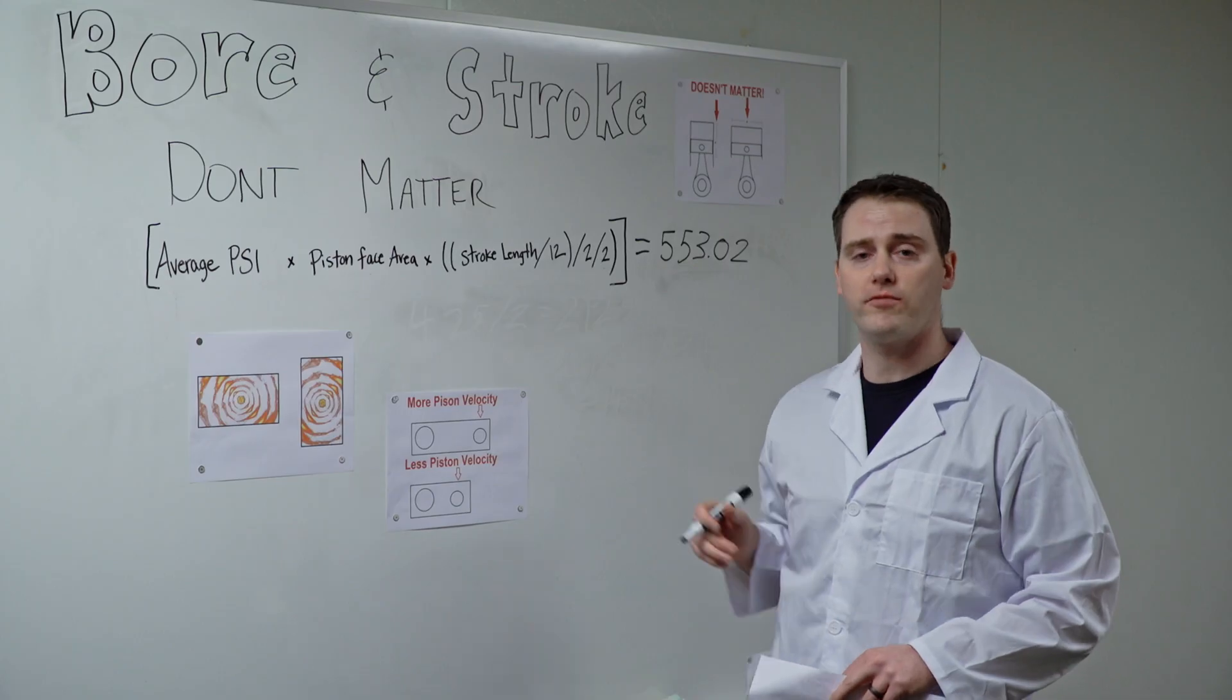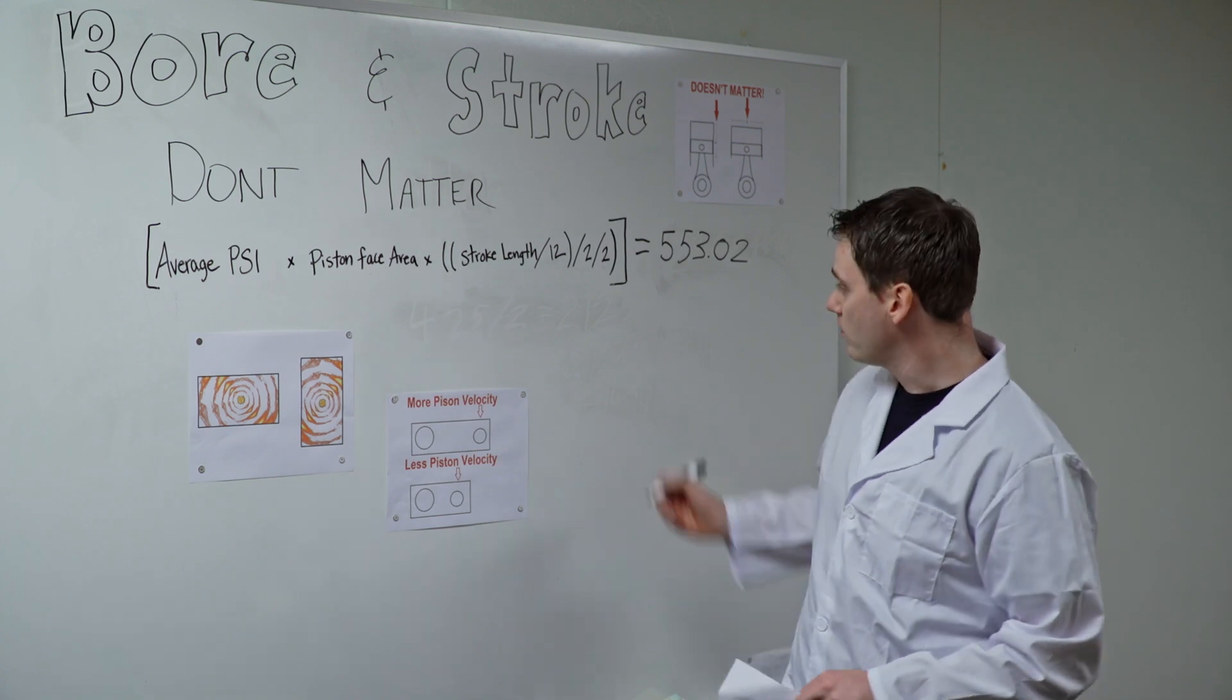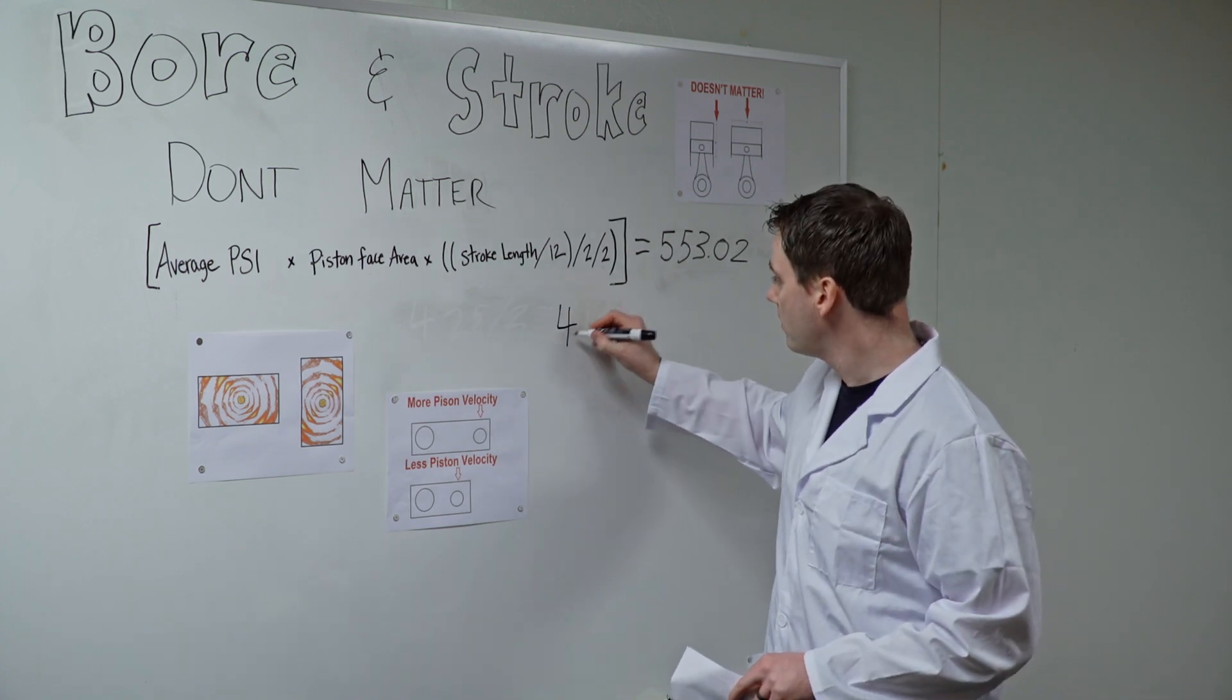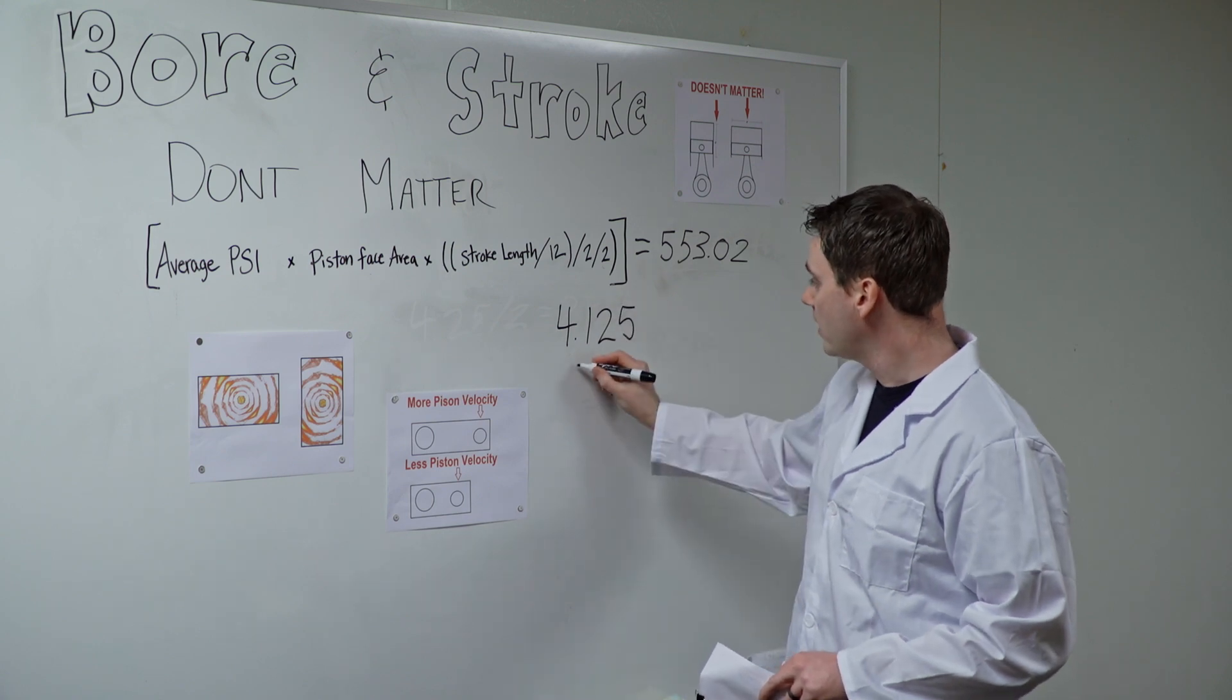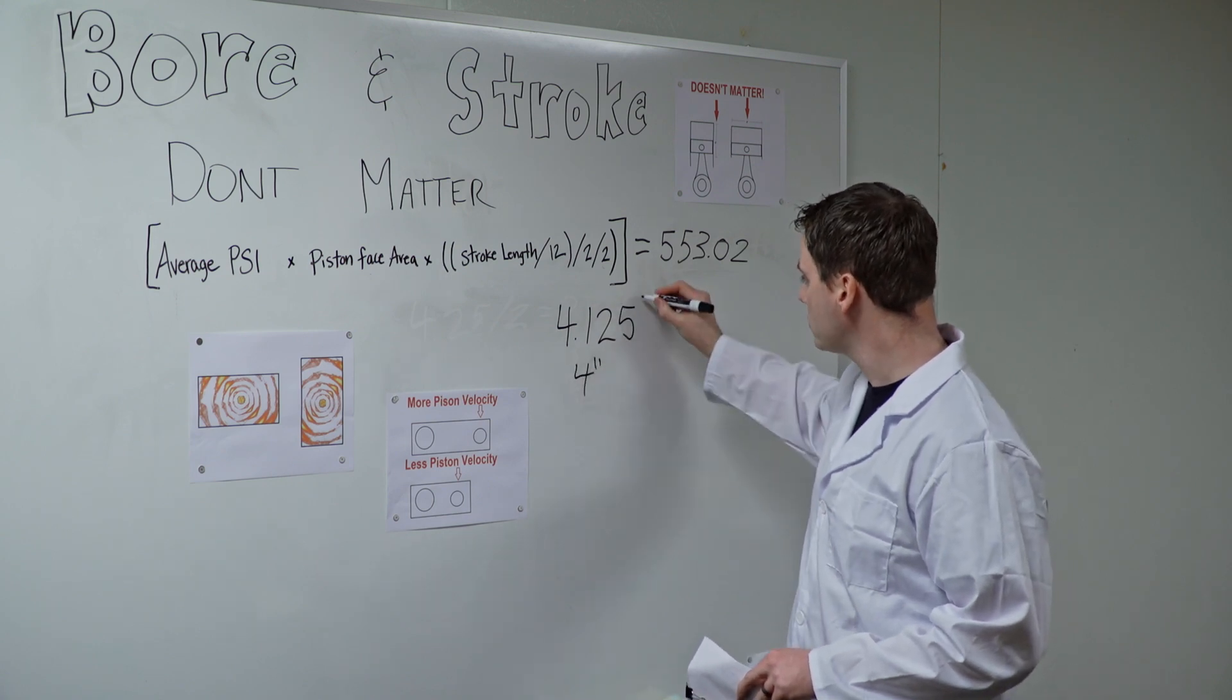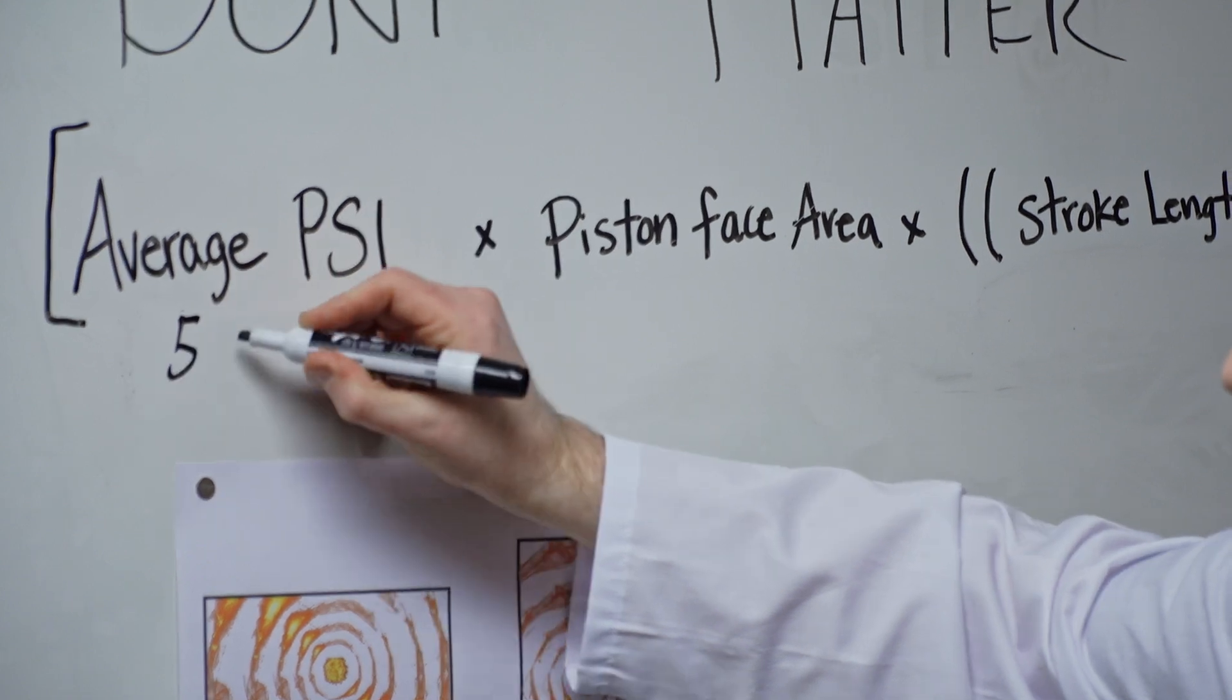So what we're going to do next is we're going to make a 427 cubic inch engine where we're going to use a 4 and an eighth inch bore instead of 4 and a quarter and we're going to use a 4 inch stroke. Now our average PSI isn't going to change because we're still using gasoline, the same intake manifold, the same heads, the same exhaust, all that. So we're going to stay at 500 average PSI.